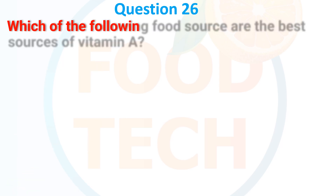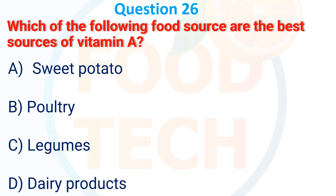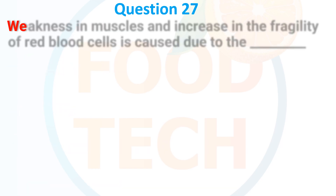Question 26. Which of the following food sources are the best source of vitamin A? A. Sweet potato. B. Poultry. C. Legume. D. Dairy products. The correct answer is A: sweet potato.